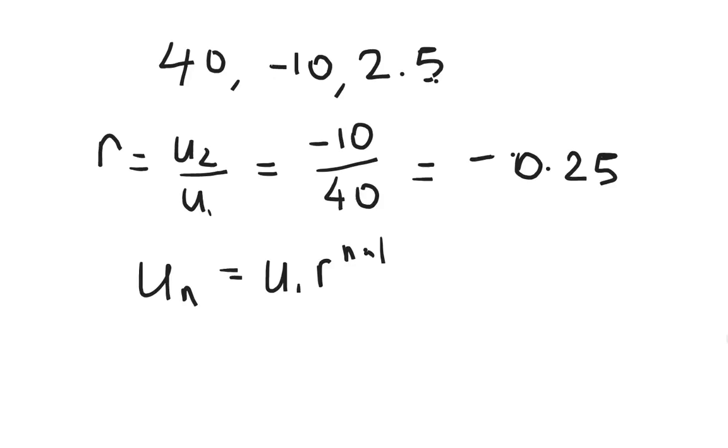But what we will talk about briefly is if I give you two random terms. So let's say I told you that U3 is a number. We're not going to actually do a whole one. We're just going to talk about it. And then I told you that U8 is equal to another number. And I asked you to find U1 and R.